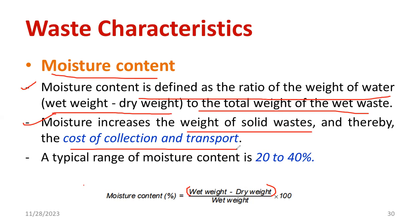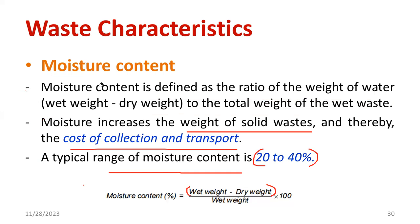The moisture content is defined as the ratio of weight of water — that means wet weight minus dry weight upon the total weight of the wet waste. The moisture increases the weight of the solid waste and thereby the cost of collection and transport also will be increased. So whenever you are going for transportation, the moisture content should be as minimum as possible. The transportation charge will be high because we cannot accommodate that much waste in the vehicle. A typical range of moisture content varies from 20% to 40%. Moisture content is normally high especially in domestic waste where leftover food and carbohydrate content is more. Also, it depends on the season — especially during the monsoon season, the moisture content will be very high.